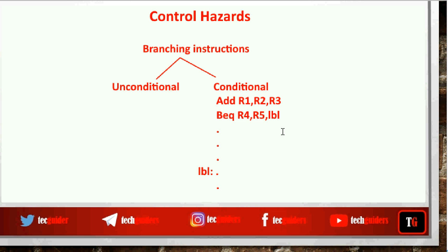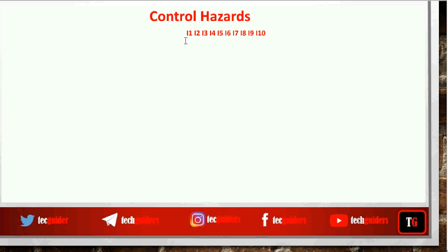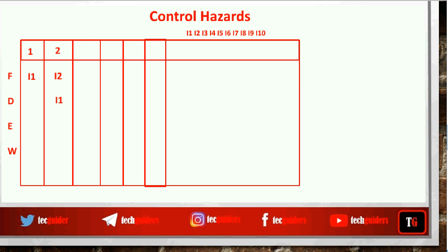When a program contains branch instructions, the control flow dependencies between instructions can cause a hazard called a control hazard. Suppose we have a program with 10 instructions i1 through i10, and i2 is an unconditional branch whose target is i7, executed on a four-stage pipeline. Assume the target address is computed only after the execution stage. In cycle 1 we fetch i1, cycle 2 we decode i1 and fetch i2, cycle 3 we execute i1, decode i2, and fetch i3, and in cycle 4 we write back i1, execute i2, decode i3, and fetch i4.